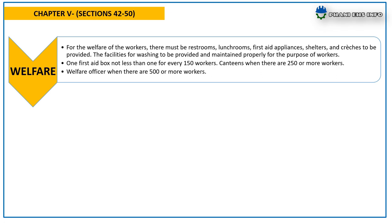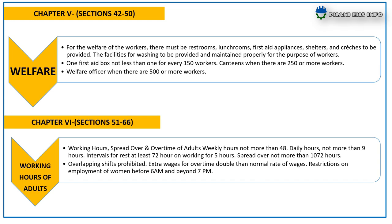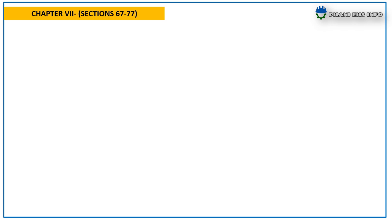Chapter 6, Working Hours of Adults, covers sections 51 to 66, mainly focused on working hours, spread over, and overtime of adults. Weekly hours must not exceed 48; daily hours must not exceed 9; intervals for rest of at least 30 minutes on working for five hours; spread over not more than 10.5 hours; overlapping shifts are prohibited; extra wages for overtime at double the normal rate of wages; and restrictions on employment of women before 6 AM and beyond 7 PM.